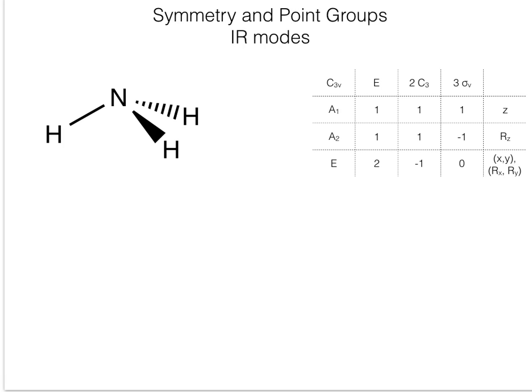This is a tutorial on how to calculate or determine the infrared active modes using symmetry and point groups. As an example, we'll start with ammonia, NH3. Ammonia has a symmetry point group of C3V, and I have the character table noted on the right side. We'll need both the structure and the character table to determine the infrared stretching or vibrational active bands.